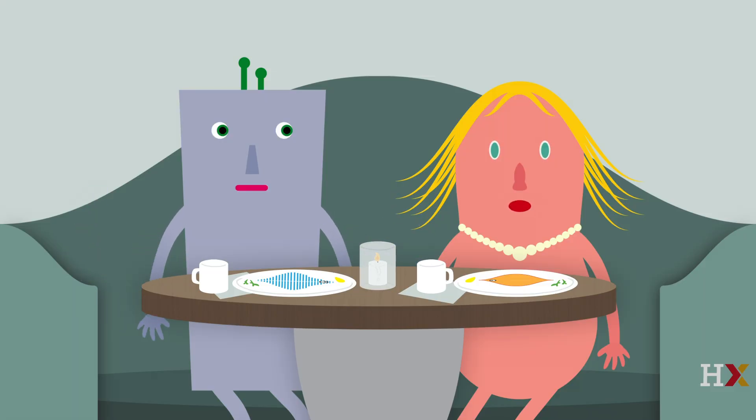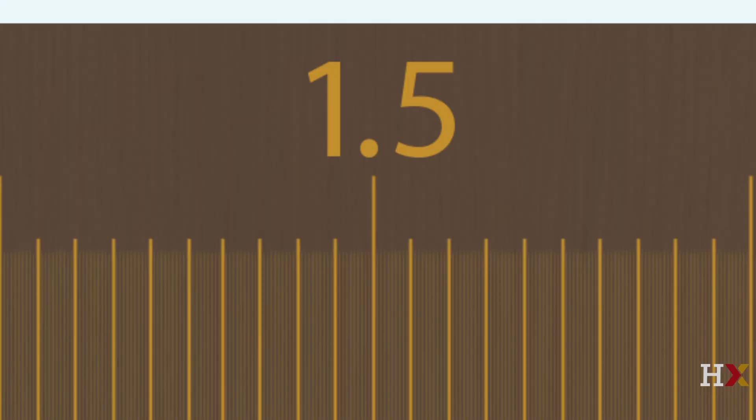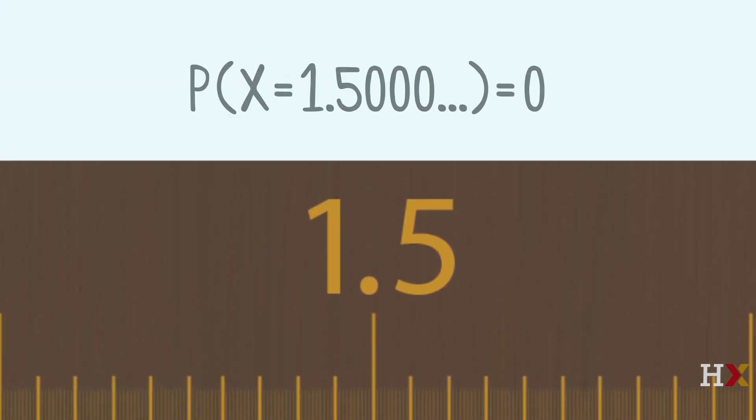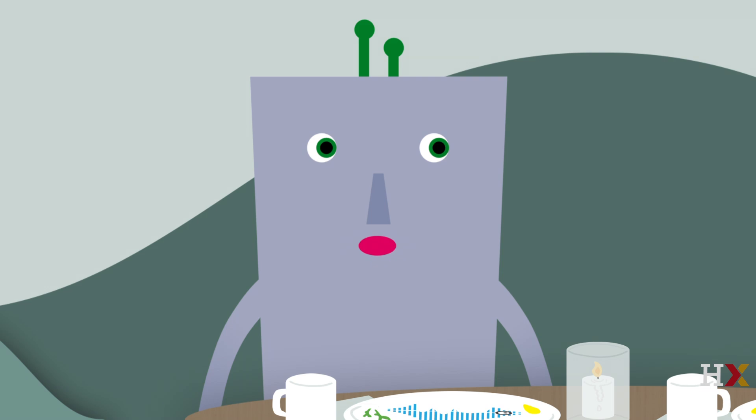Randi's position is a continuous random variable, even if we can't measure it to infinite precision. The probability is 0 that her position is 1.500, 0, 0, 0, forever. I know that's what's taught in Continuopolis, but it doesn't seem very practical just to say the probability is 0. Can we talk about something other than fish?